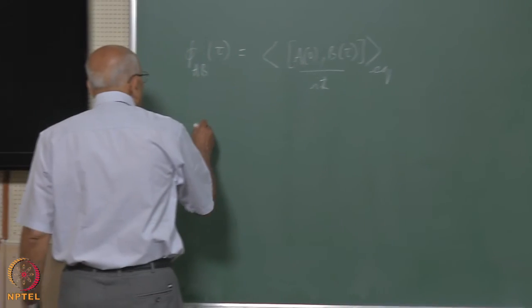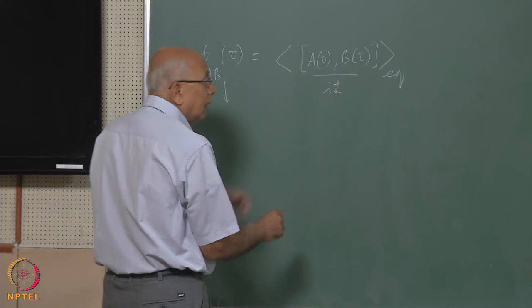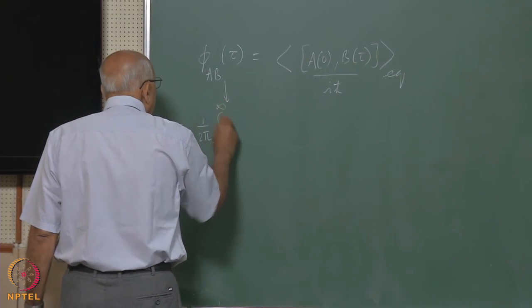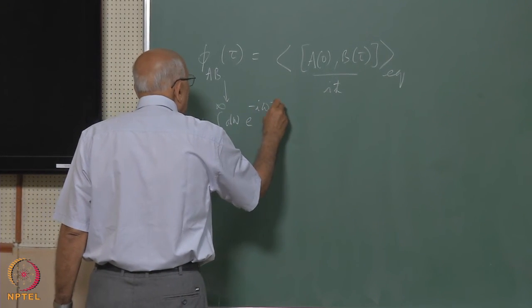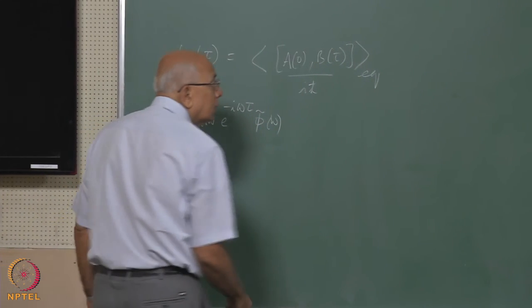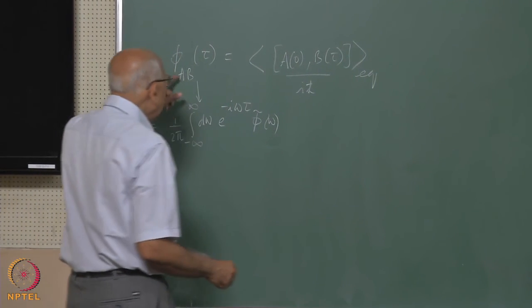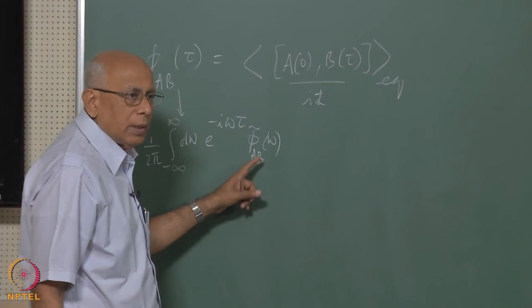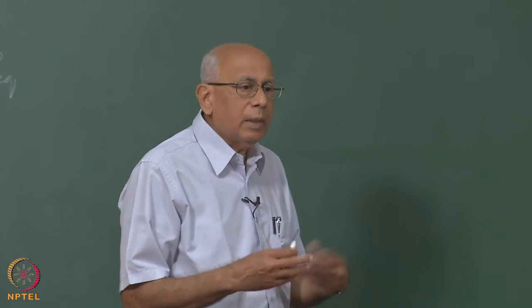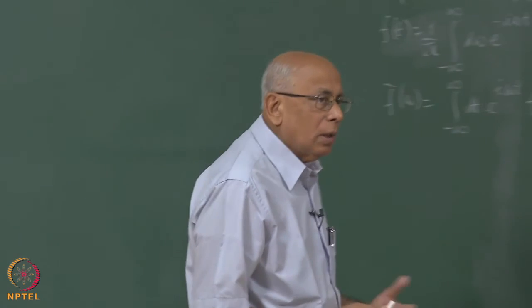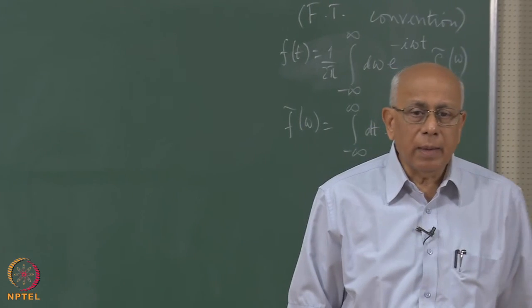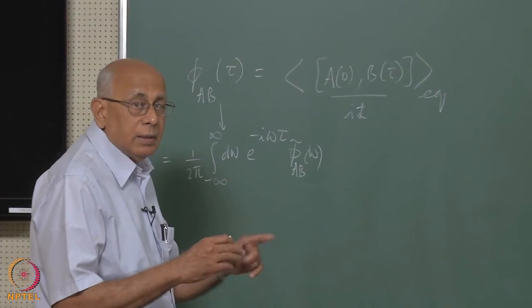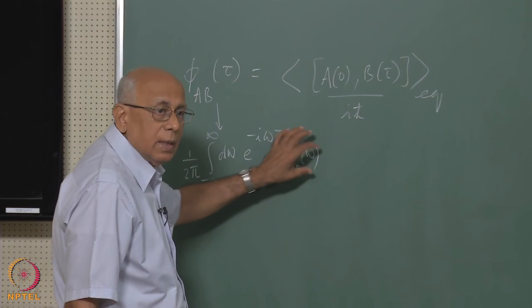The Fourier transform of the response function φ_AB(τ) is defined as: φ_AB(τ) = (1/2π) ∫_{-∞}^{∞} dω e^{-iωτ} φ̃_AB(ω). We discovered there was a spectral representation for φ̃_AB(ω) in terms of a sum over matrix elements of A and B in the Schrödinger picture, over a basis of states of the unperturbed Hamiltonian H₀, multiplied by a difference of two Boltzmann factors, and by delta functions at all transition frequencies of the system.